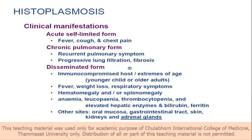What are the symptoms? Immunocompromise first, then fever, cough, and chest pain. Recurrent pulmonary. Younger children and older adults are the victims of this disease. Fever, weight loss — hepatomegaly or splenomegaly — because when infected, all systems are really poor. Anemia, leukopenia, thrombocytopenia, elevated hepatic enzymes.